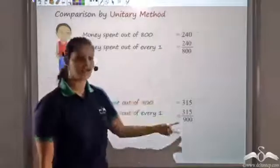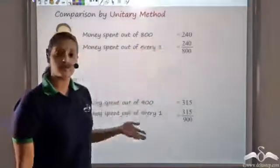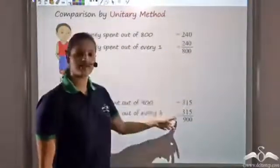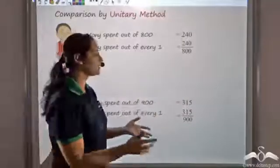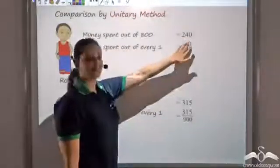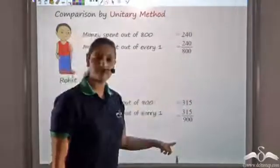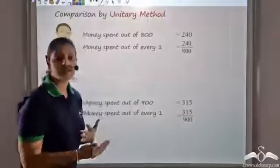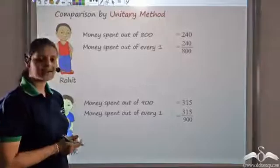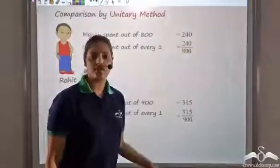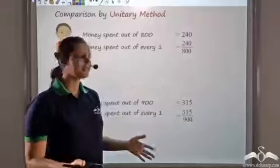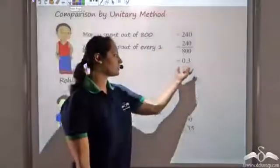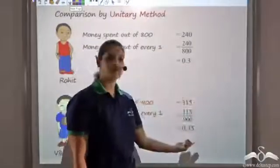So we have these two fractions. Now to compare who spends more, I have to compare these two fractions. And we know that to compare fractions it is very tedious. I can first bring them to simplest form, then make the LCM of the denominators, make the denominators the same, and then only I can compare. Or else I can convert these fractions to decimal numbers, but again that would be tedious. After all that process I get 0.3 and 0.35 as the decimal numbers.